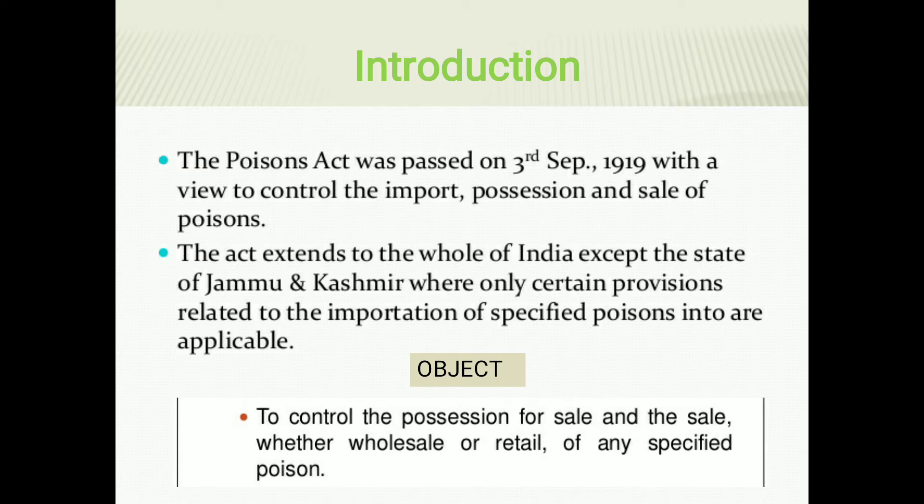The act extends to the whole of India except the state of Jammu and Kashmir, where only certain provisions related to importation of specified poison are applicable. The main objective of this act is to control the possession for sale, and the sale whether wholesale or retail of any specified poison.